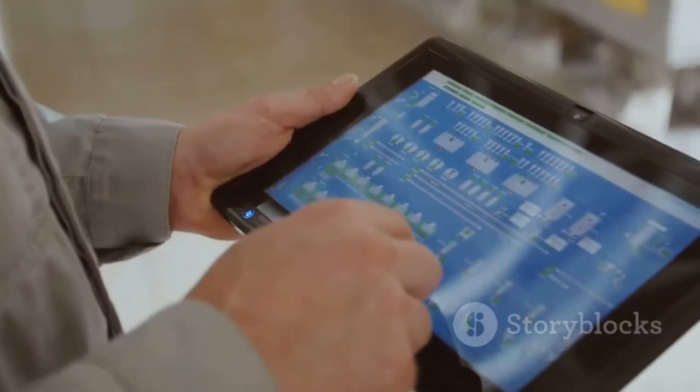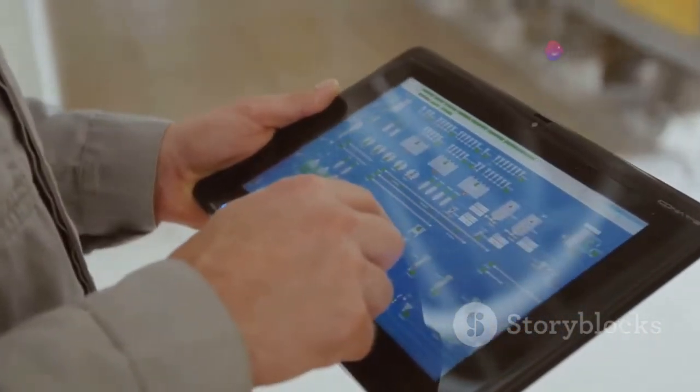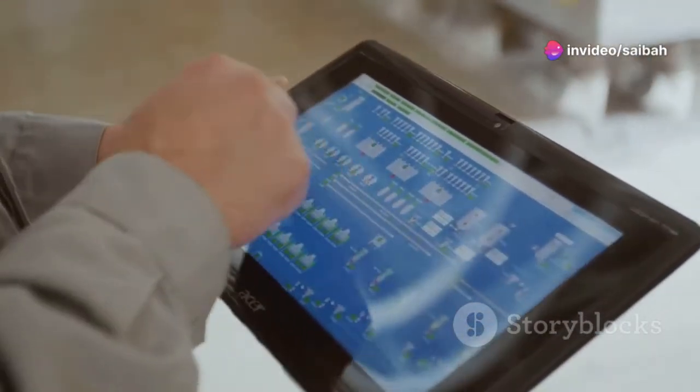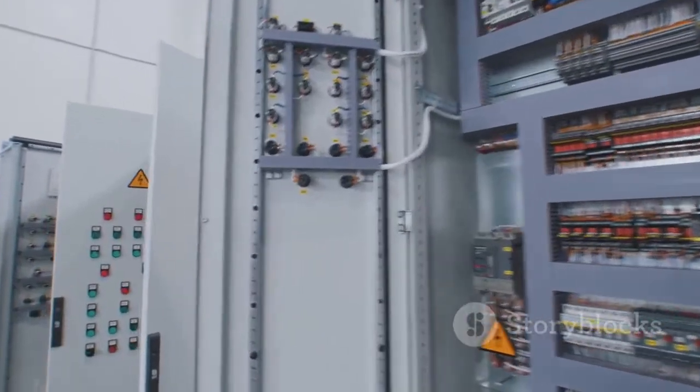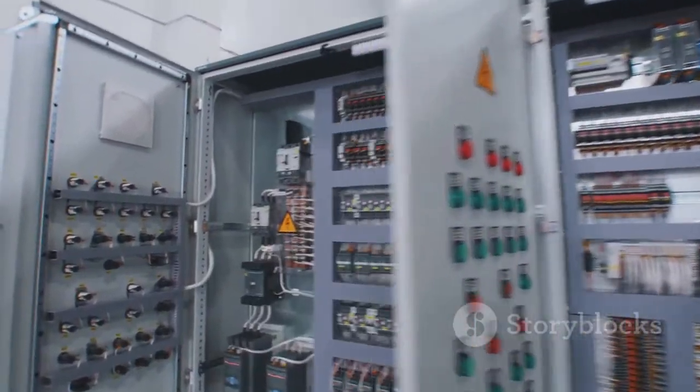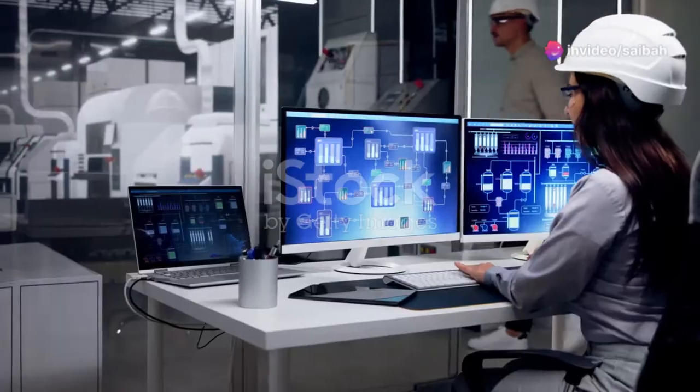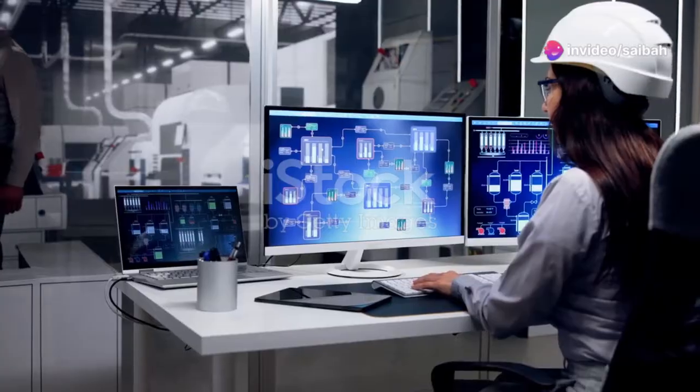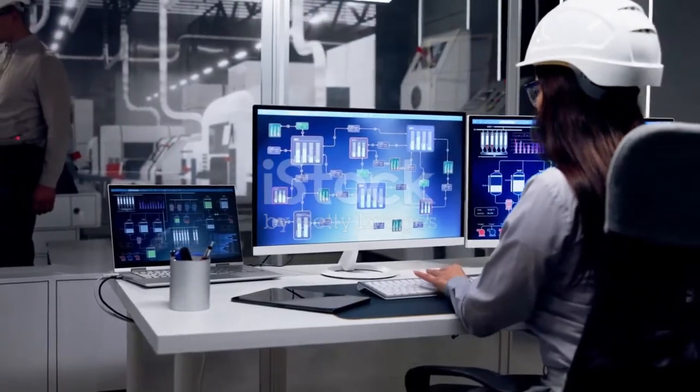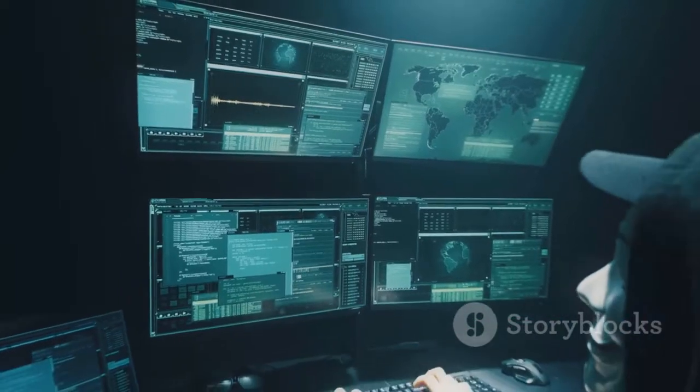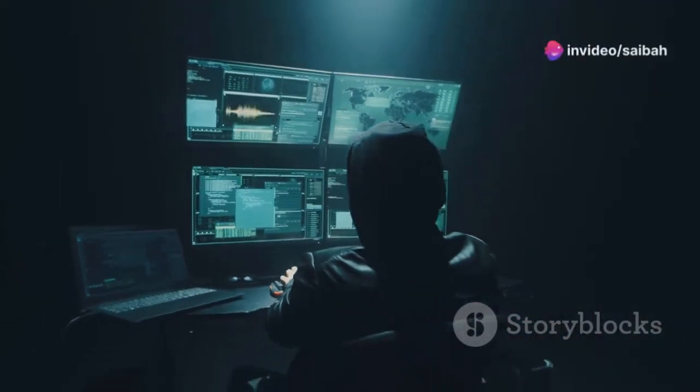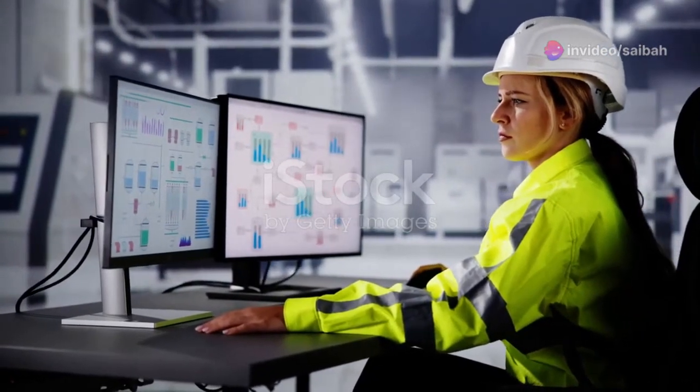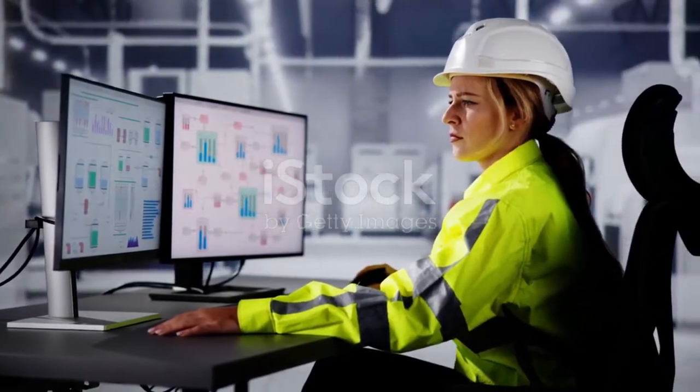In contrast, HMIs serve as the user interface, providing operators with a visual and interactive way to monitor and control specific equipment or processes. Let's look at some specifics. The scope of SCADA is plant-wide or system-wide, whereas HMI is local to a specific machine or process. Functionality-wise, SCADA offers data acquisition, control, and alarming, while HMI focuses on monitoring, control, and visualization. When it comes to data handling, SCADA deals with large-scale real-time data, and HMI focuses on specific parameters. Lastly, the user interface of SCADA is primarily for engineers and technicians, while HMI provides a user-friendly graphical interface.